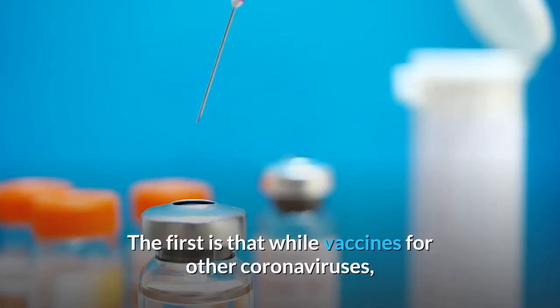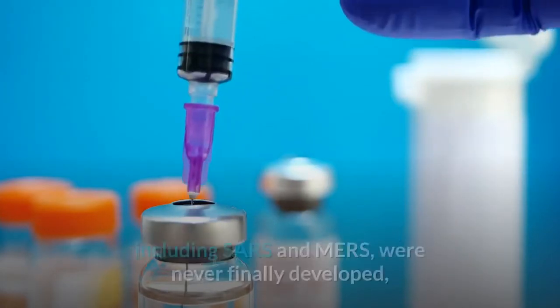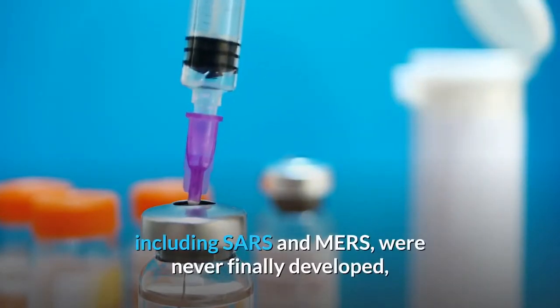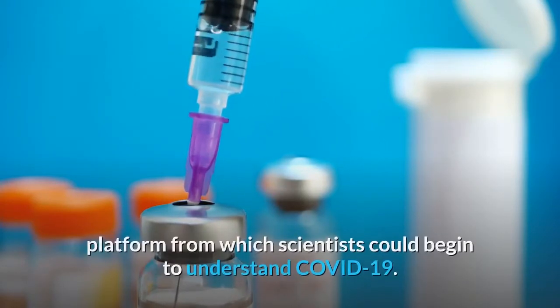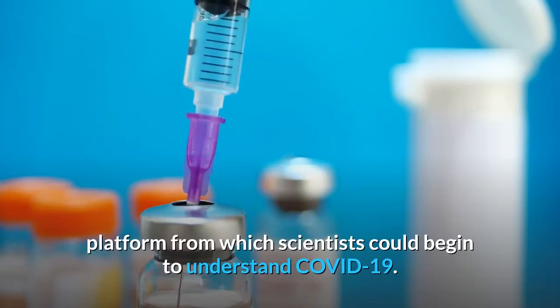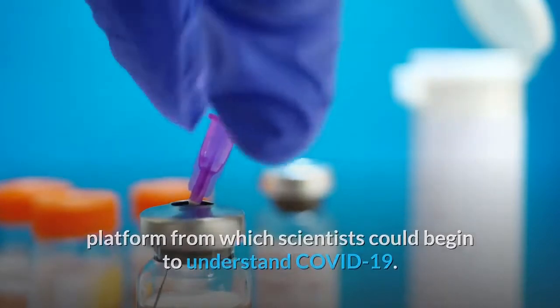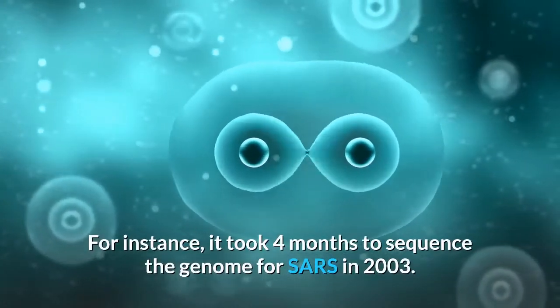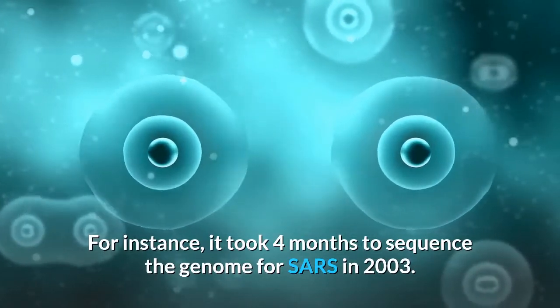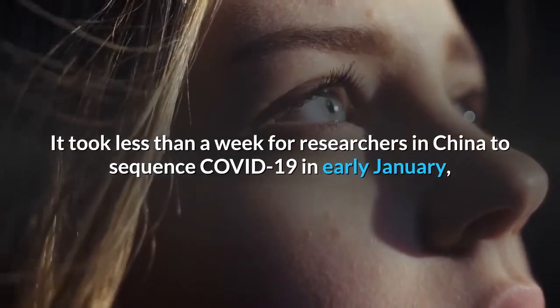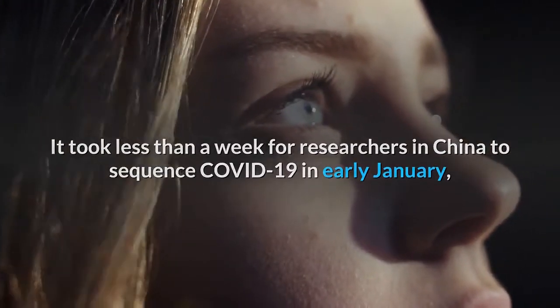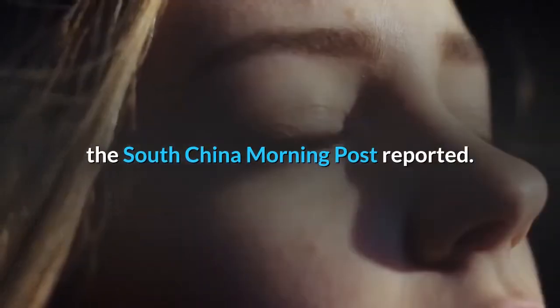The first is that while vaccines for other coronaviruses, including SARS and MERS, were never finally developed, the research done into understanding these viruses helped create the platform from which scientists could begin to understand COVID-19. For instance, it took four months to sequence the genome for SARS in 2003. It took less than a week for researchers in China to sequence COVID-19 in early January, the South China Morning Post reported.